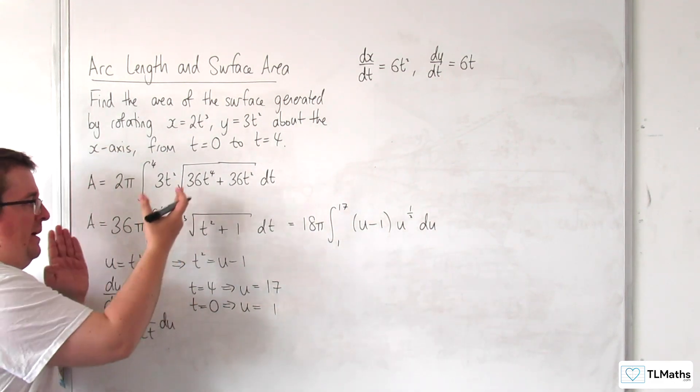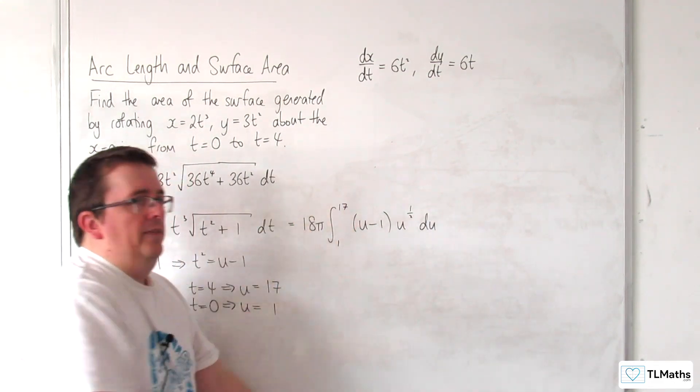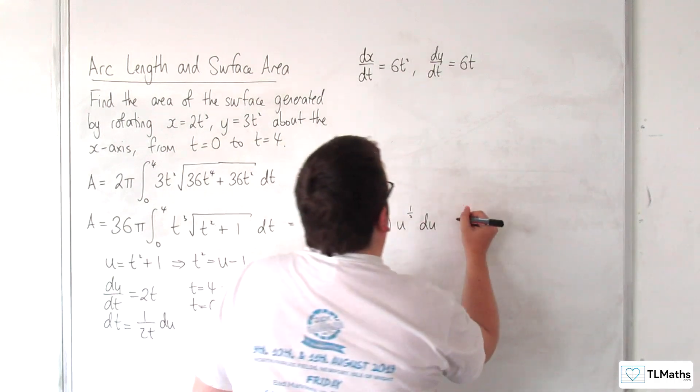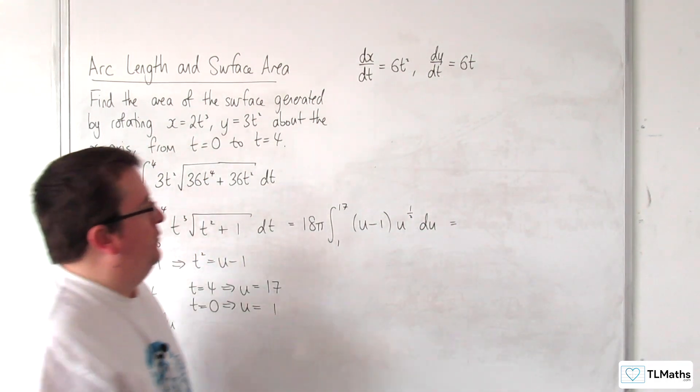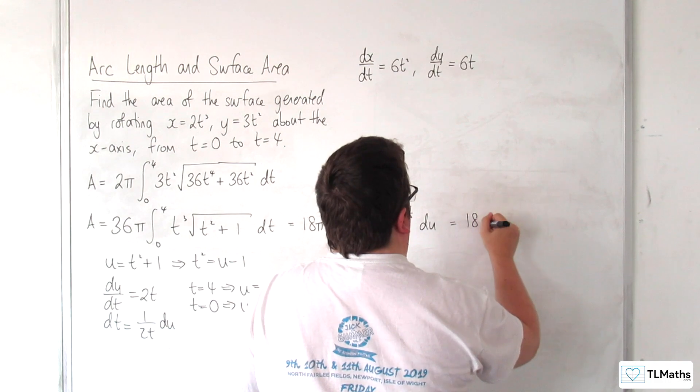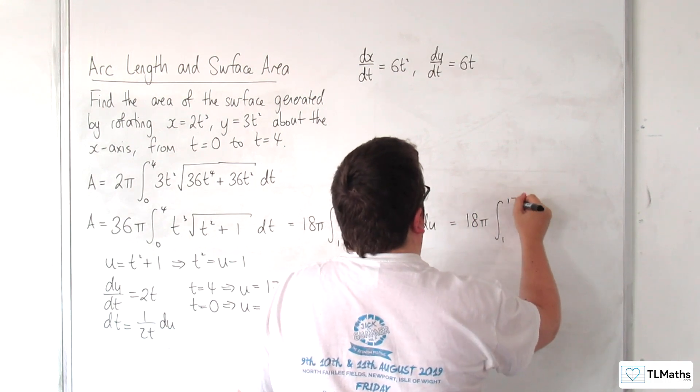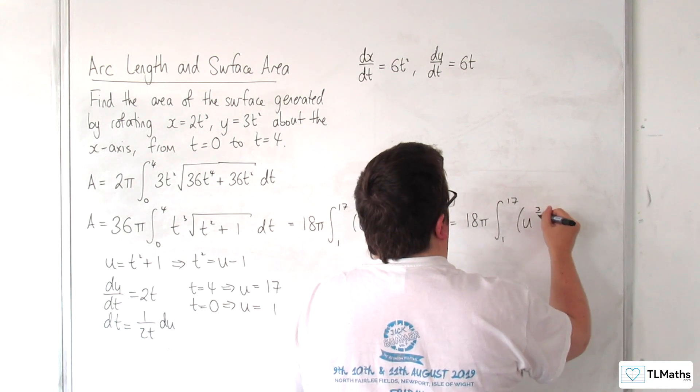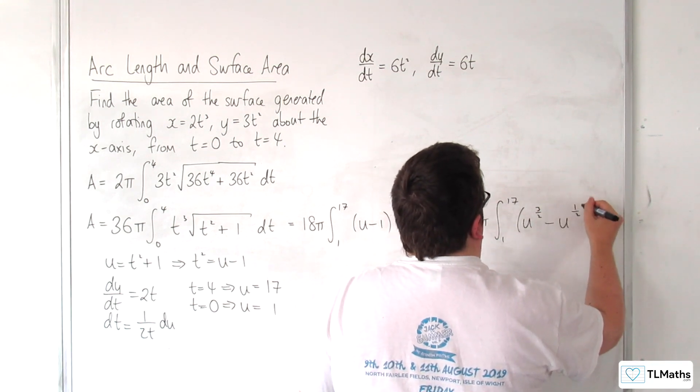And, of course, if you want to take more steps to get from there to there, then be my guest, and take as many steps as you want. Okay, so I'm going to multiply through that bracket, 18π, between 1 and 17, of u to the 3 halves, take away u to the half du.